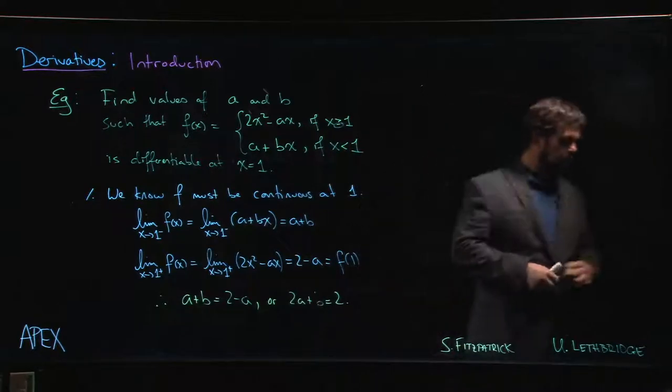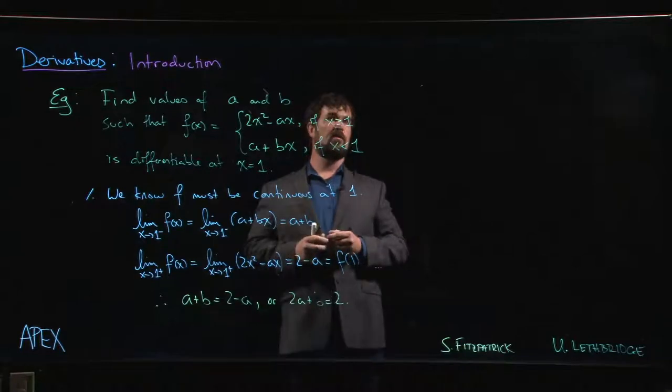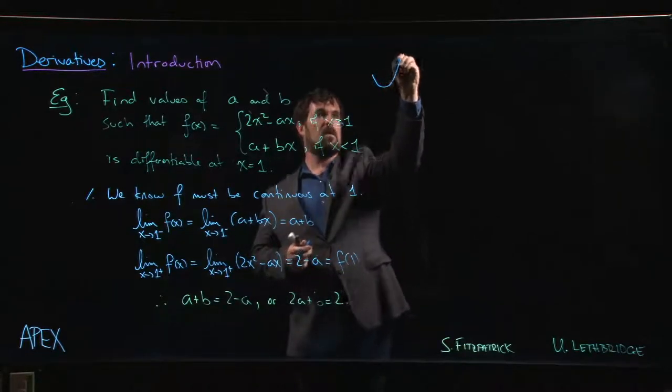What's happening here is if we choose a value of a and b that satisfies this equation, what you're going to see if you were to plot it is you're going to have a parabola